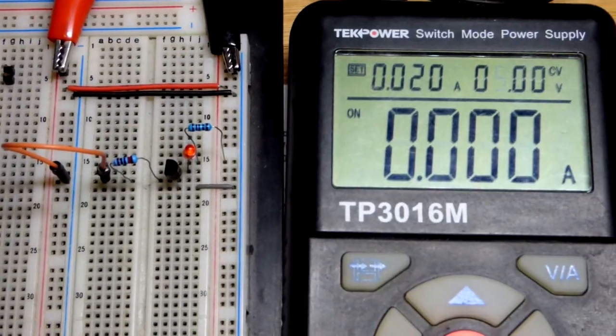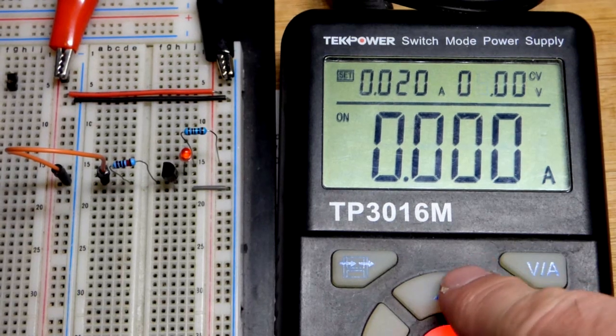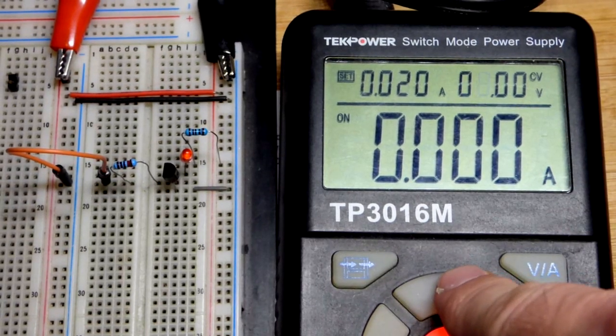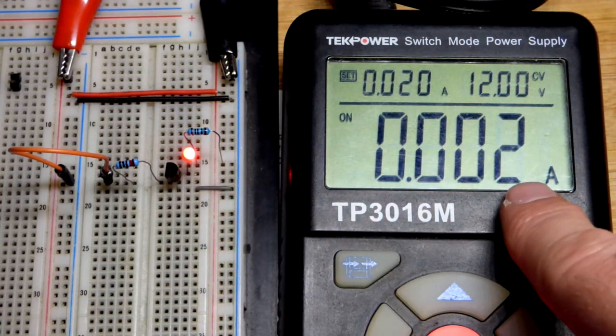And I got current limited to 20 milliamps, but that shouldn't be a problem. We're going to work our way up, and you're going to see that at 12 volts, all of a sudden, the LED kicks on.